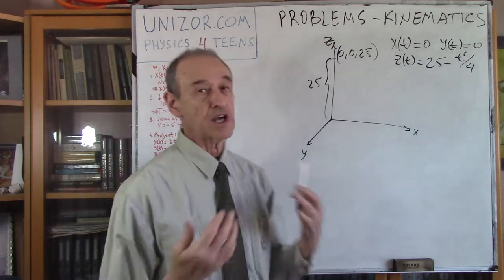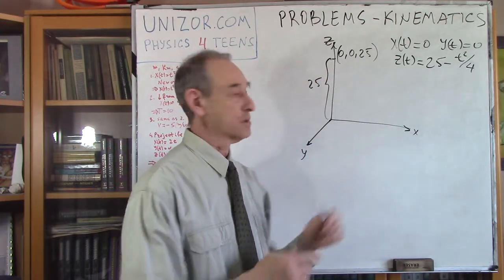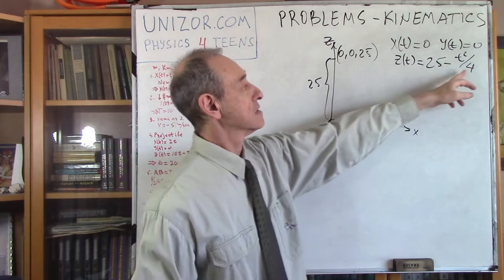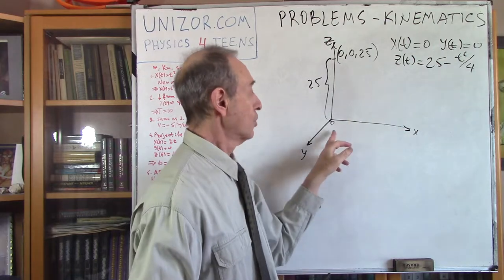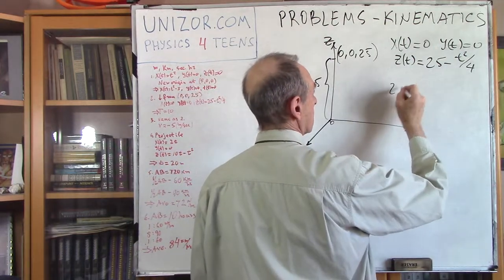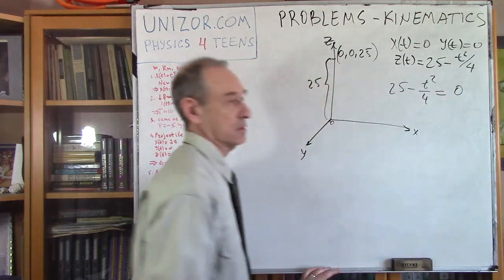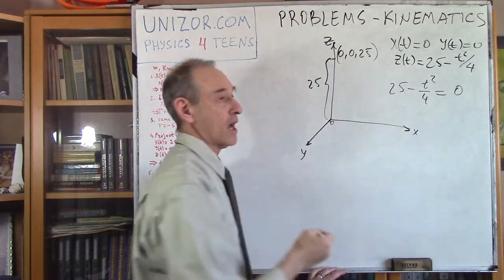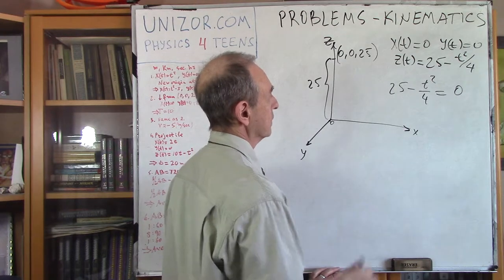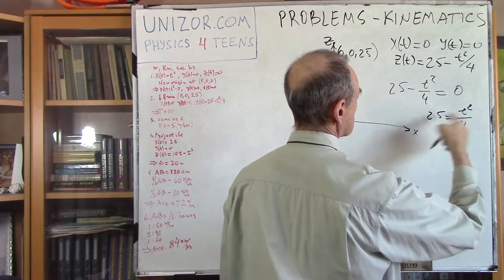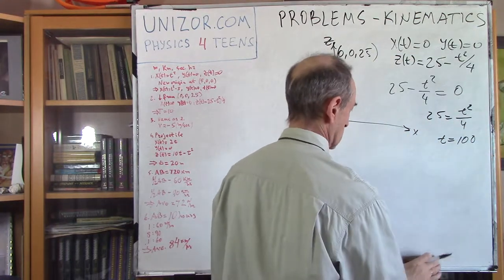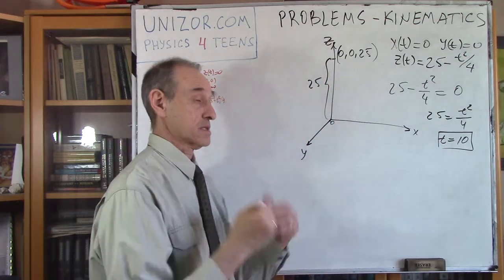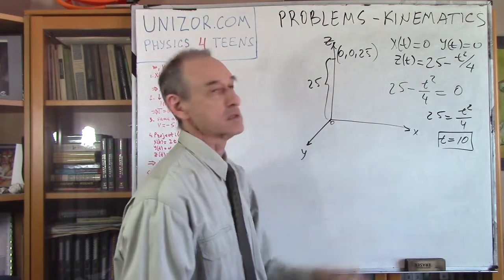My question is: what is the time until I reach the ground? This function is diminishing from 25 at t equals 0 down to 0 at some point. To find the time, I set z equal to 0. Whenever my height equals 0, that time t is exactly the falling time. The solution is: 25 = t²/4, so t² = 100, and t = √100 = 10. My answer is the falling time is 10 seconds, if everything is in seconds and meters.